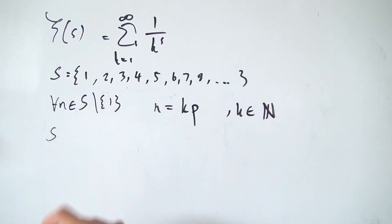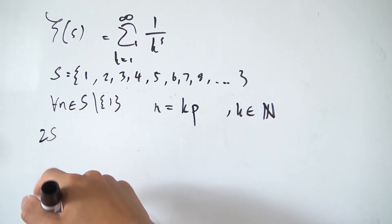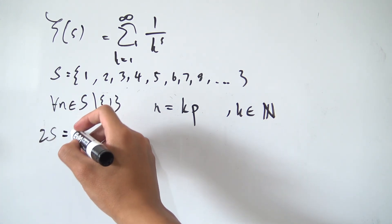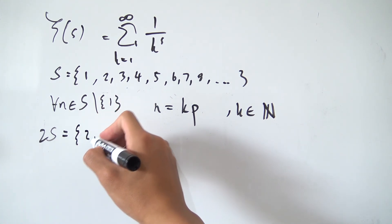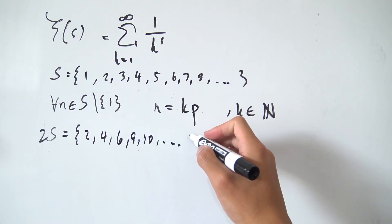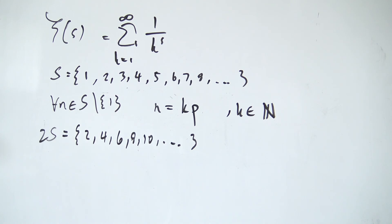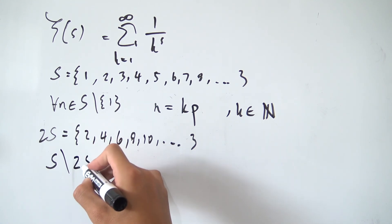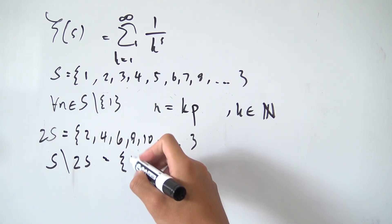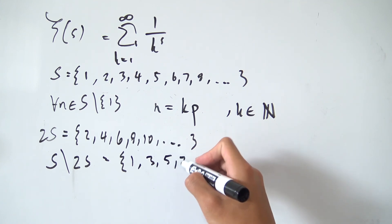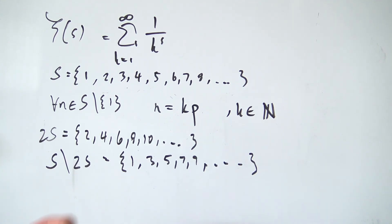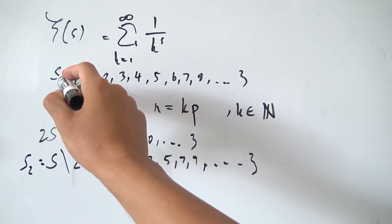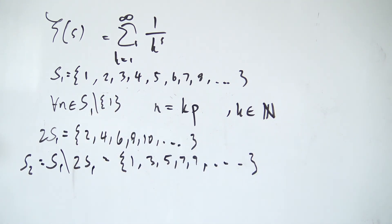If we have our set S and we multiply it by 2 — meaning we multiply every element by 2 — then 2 times S equals {2, 4, 6, 8, 10, ...}, which is all the even numbers. Since 2 is our first prime, we're getting rid of all the multiples of 2. If we take set S and remove all elements in 2S, we're left with all the odd numbers: 1, 3, 5, 7, 9, and so on. I'll call this new set S2, and the original set S1.